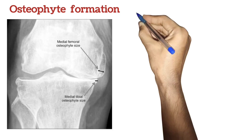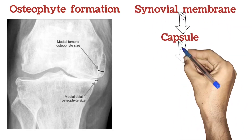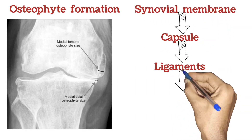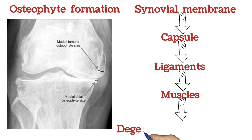The synovial membrane, capsule, ligaments, and muscles surrounding the knee also undergo degenerative changes.